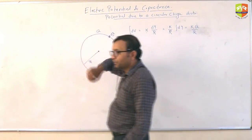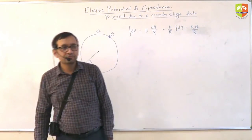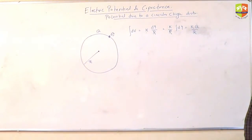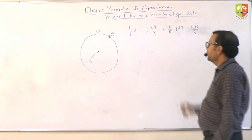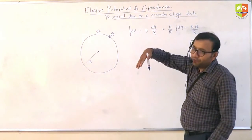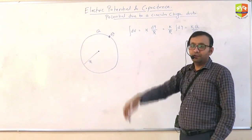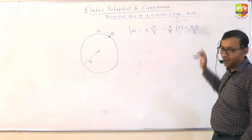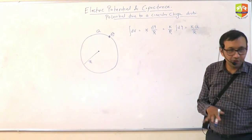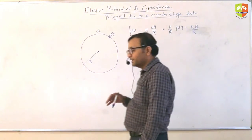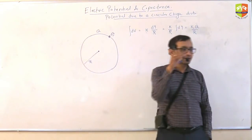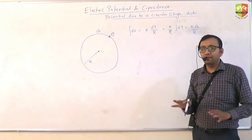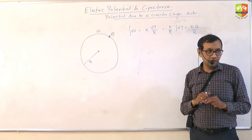Does it matter whether q is uniformly or non-uniformly distributed? Does it matter? It doesn't matter? Because integral of dq will be q only whether it is uniformly or non-uniformly distributed. Okay. So in any charge distribution, if all the charges are at the fixed distance from a point, the potential will be k times total charge by r. Simple.